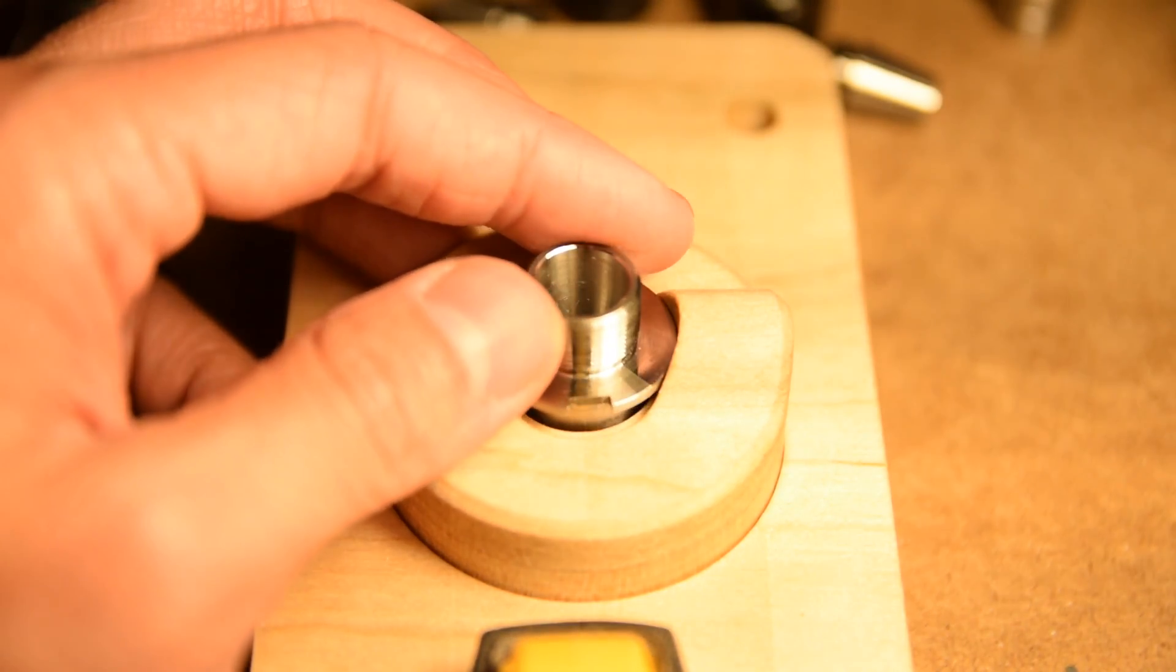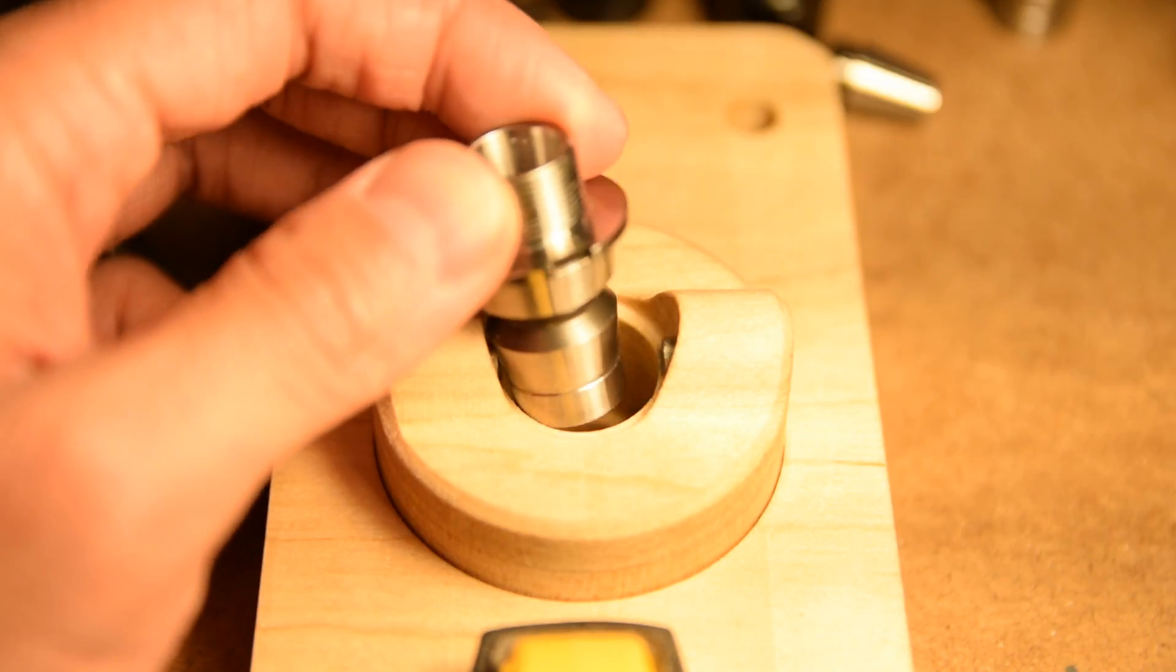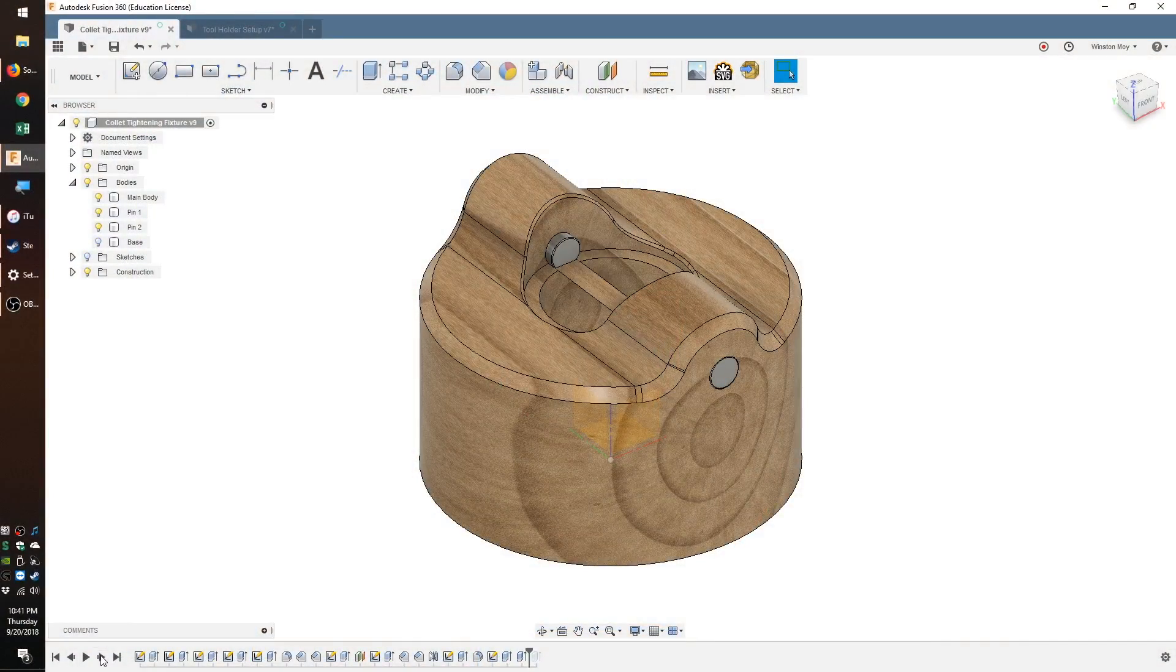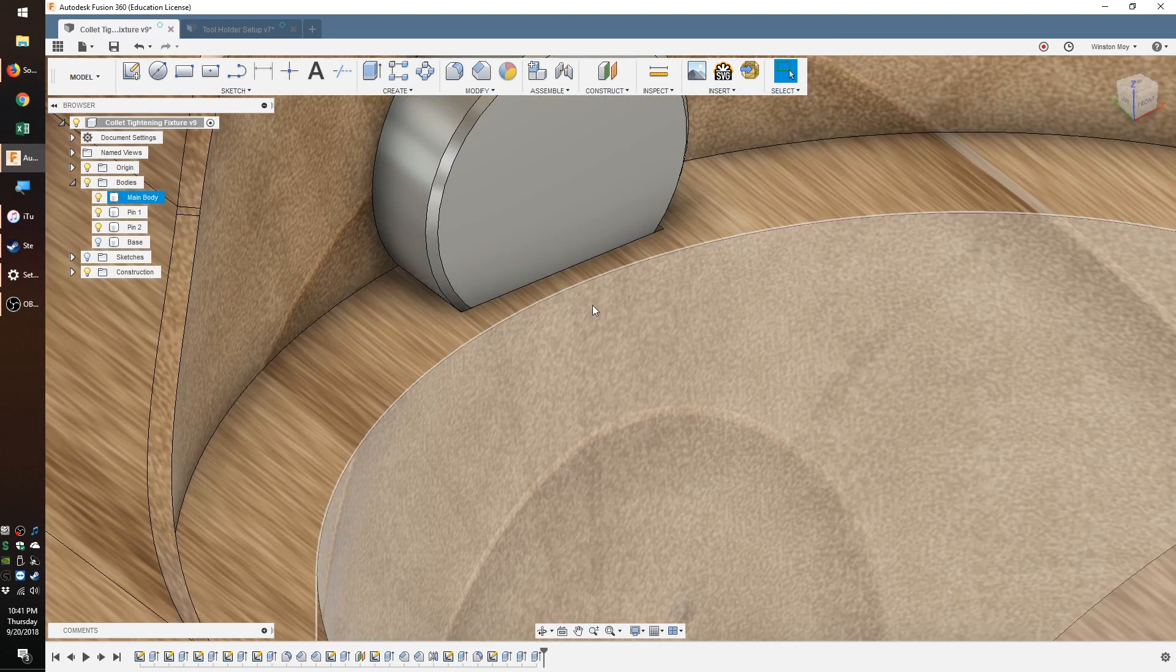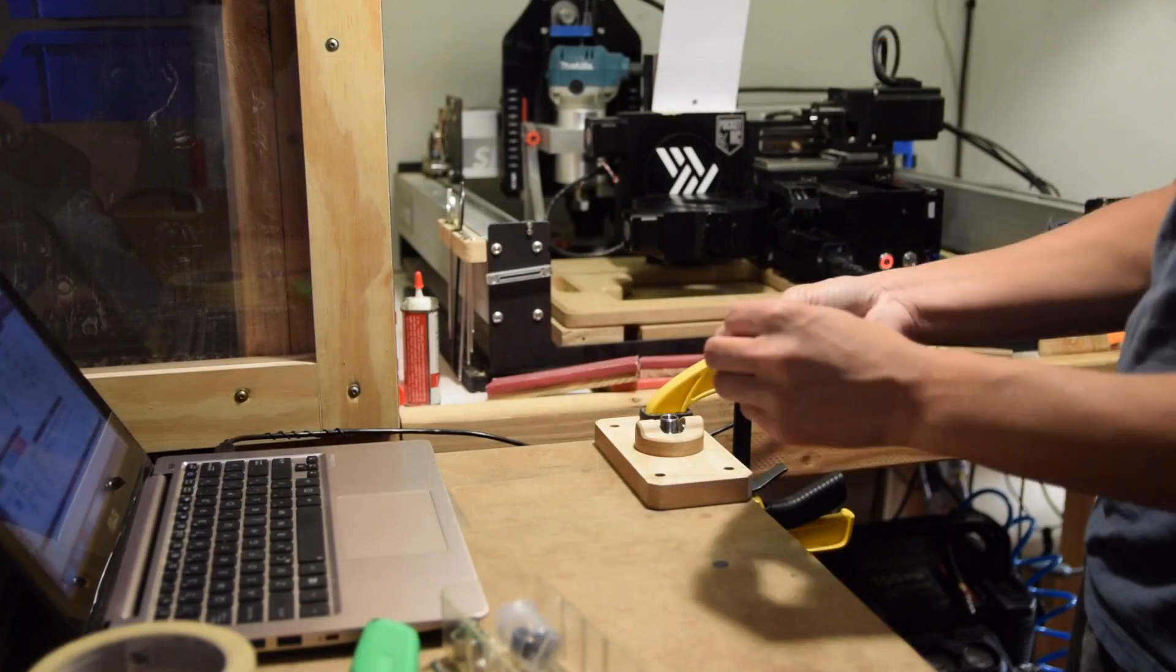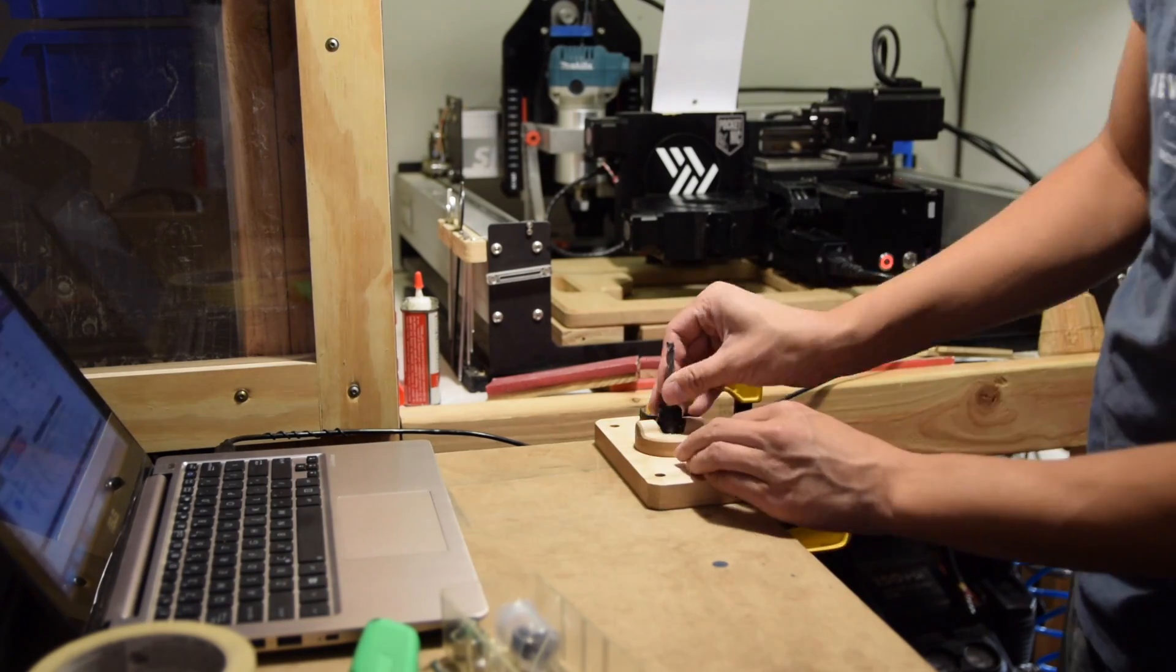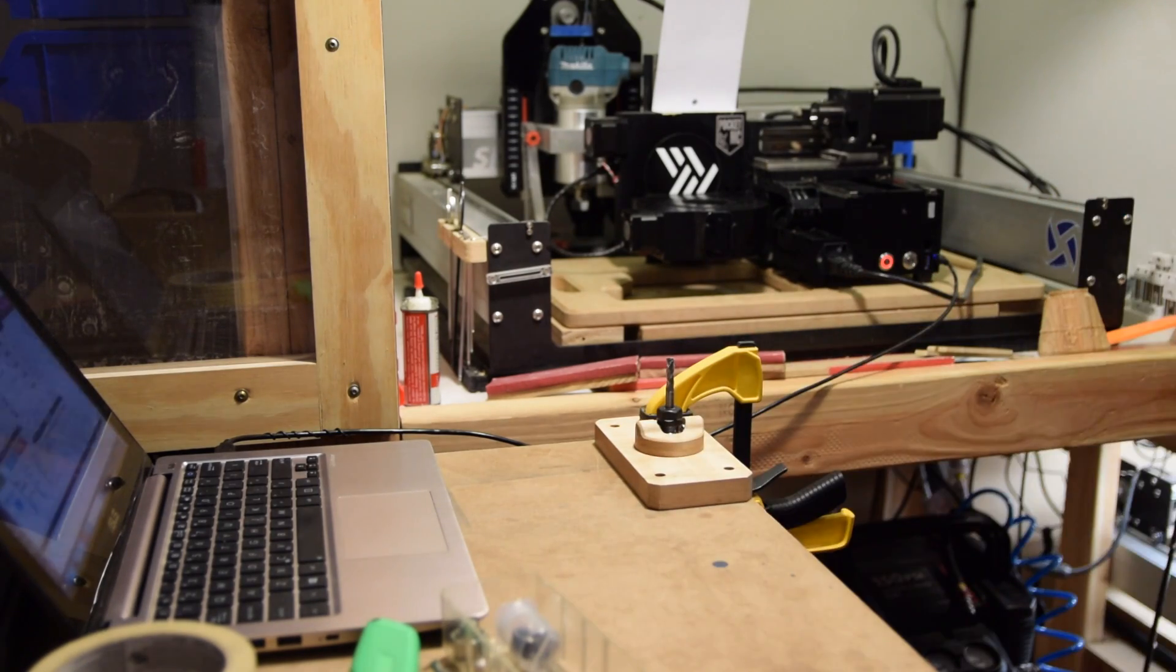That would have been my preferred solution had my workpiece been attached more securely than with tape. Alternately, I could model some physical stops into the tool setting fixture so that the pins can only be inserted to the proper depth. Whatever. This project was still good for some five axis practice and I got something practical out of it which is what I was really after.